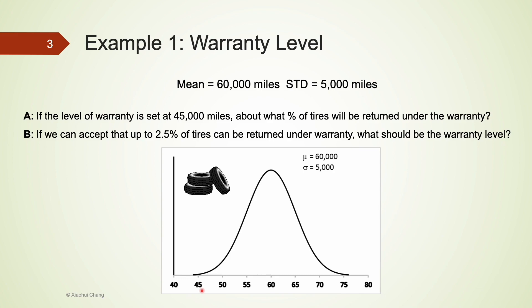To be eligible for return, the tire mileage must be less than 45,000. To use the empirical rule, we convert to z-scores. The mean 60,000 has a z-score of zero. Since 45,000 is 15,000 less than the mean, and each standard deviation is 5,000, that's three standard deviations below the mean — giving a z-score of negative 3.